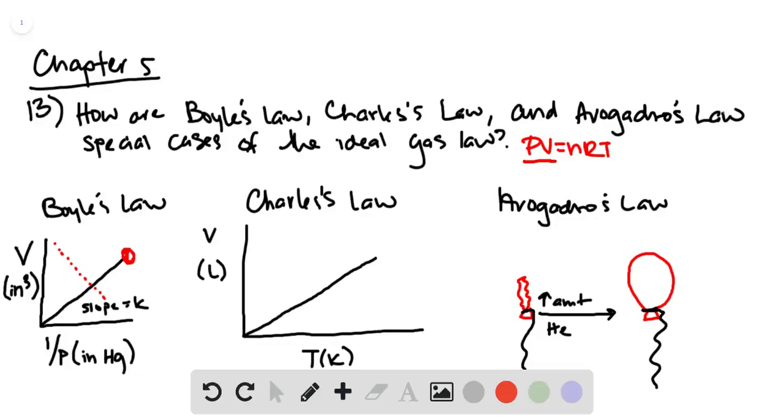Charles' law additionally defined how the volume of a gas changes linearly with temperature at some constant for each gas. So that's shown here, temperature on the x-axis, volume on the y-axis, and as temperature increases, so does the volume of the gas.